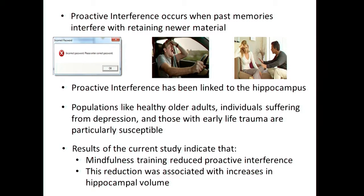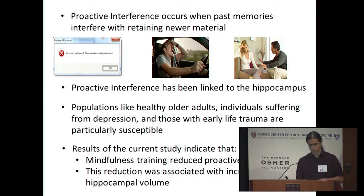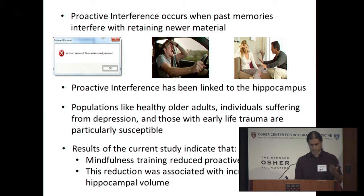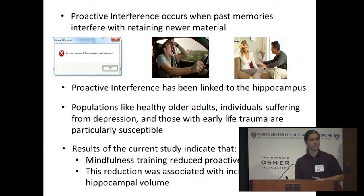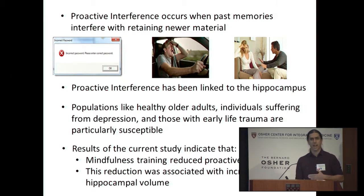We know this ability is related to the hippocampus, and it is particularly relevant to older adults, people with depression, and people with early life trauma. The findings of this research indicated that people after undergoing mindfulness training reduced such proactive interference—they reduced interference from past memories. And the more they did so, the larger the left hippocampus became.